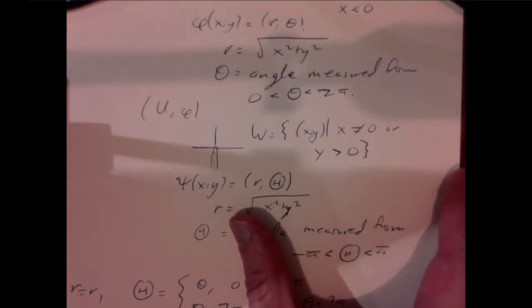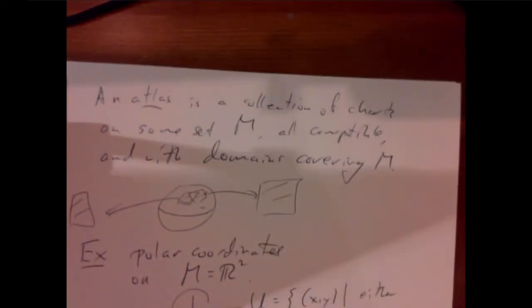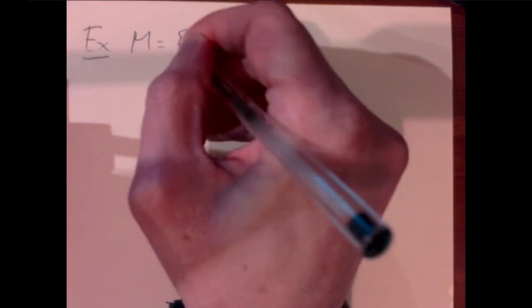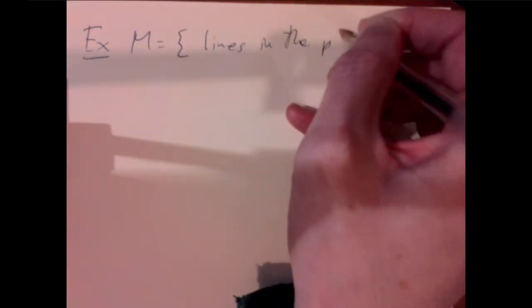Our next example — one of the more important ones in the subject — is where M is the abstract set of lines in the plane R^2. We want to consider all possible lines. Not all lines can be written in the standard format y = mx + b, but most of them can. So let U be the set of lines of the form y = mx + b — the non-vertical lines — and let W be the set of lines of the form x = ny + c — the non-horizontal lines.